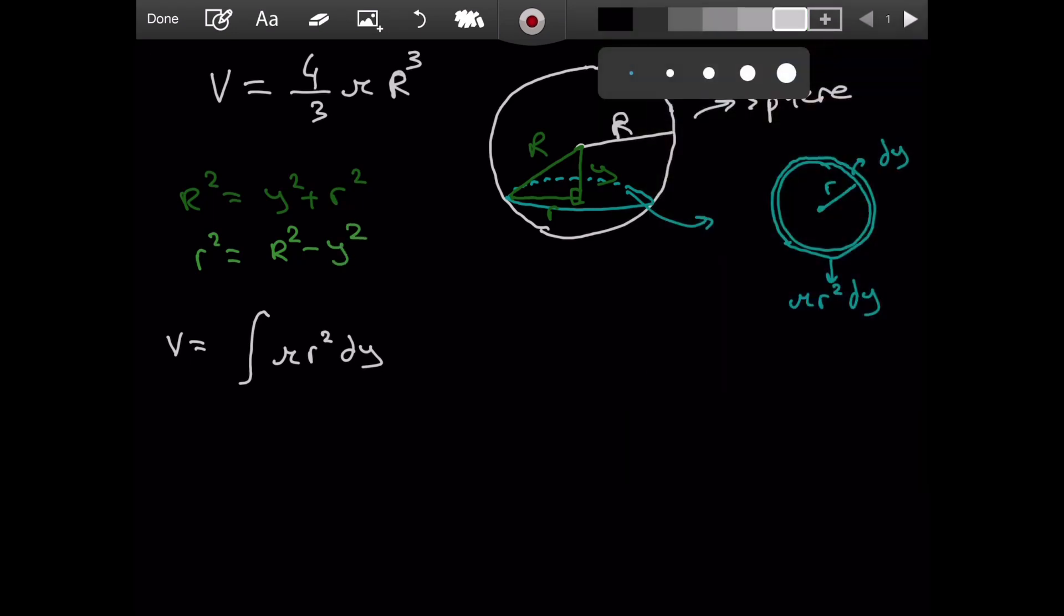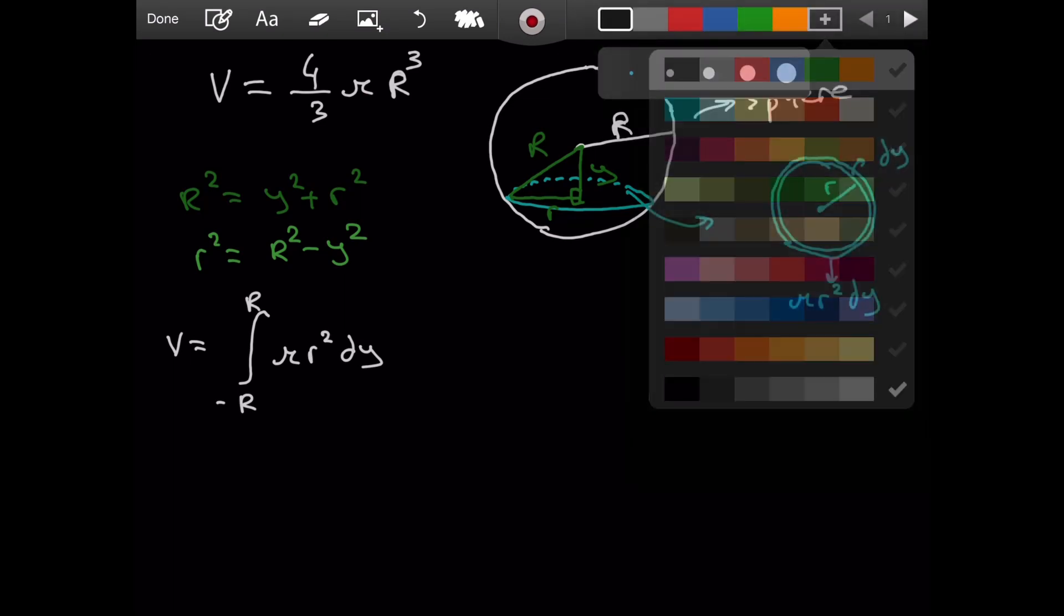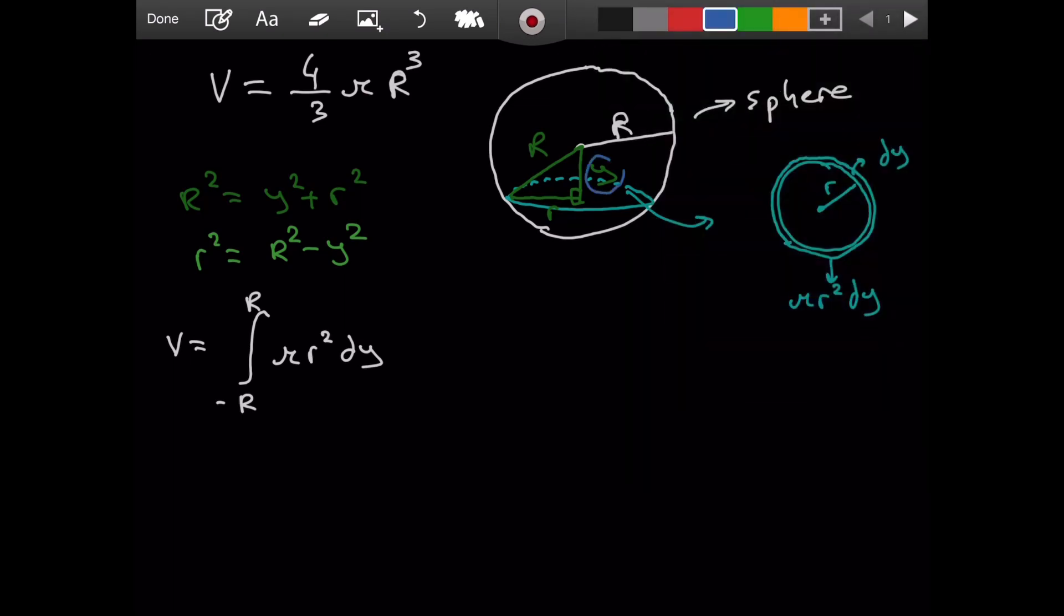What about the boundaries? The boundaries, since we want to calculate the whole volume, will be from negative r to r. Because think of it like this. When this guy, y, extends all the way up to here, it will be at the value negative r. I make the assumption that we set the coordinate system like this, x, y.